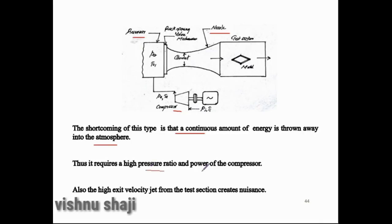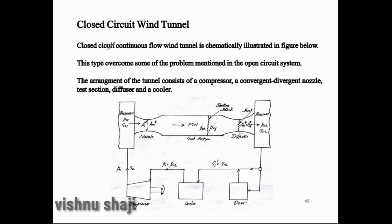The shortcoming of this type is that a continuous amount of energy is thrown away into the atmosphere. It requires a high pressure ratio and high power from the compressor. Also, the high exit velocity jet from the test section creates nuisance — this is direct air exit causing sound pollution.